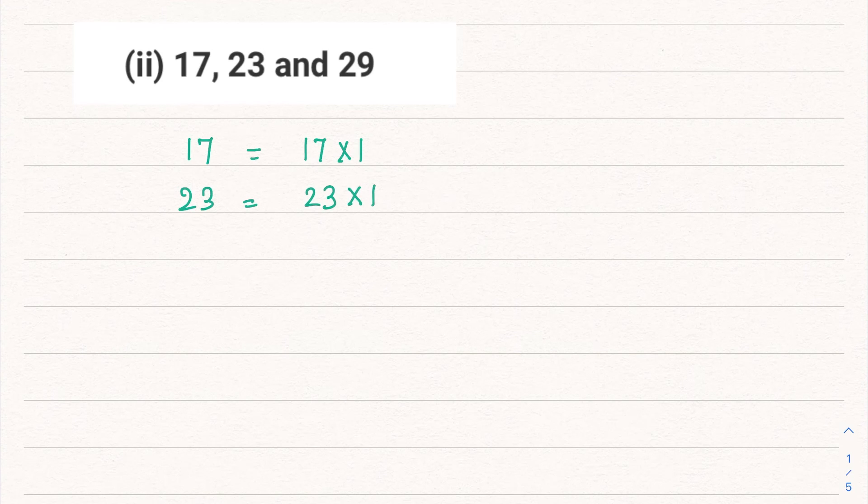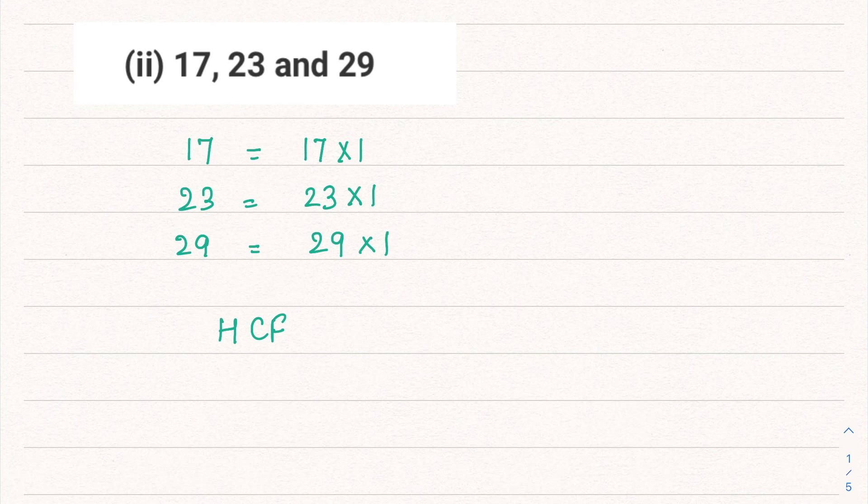Again, 23 is also a prime number, so it also has two factors: 23 and 1. And 29 is also a prime number, so it also has two factors—that is 1 and the number itself, 29. So if you see what is common, prime numbers don't have any other common factor. The HCF is 1.